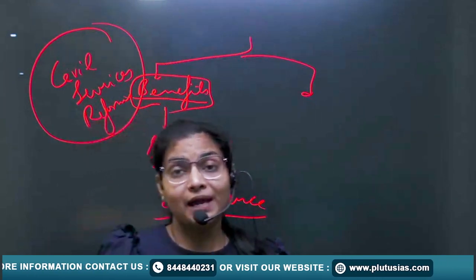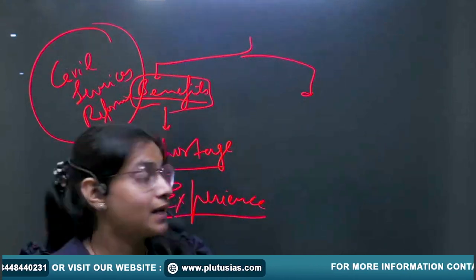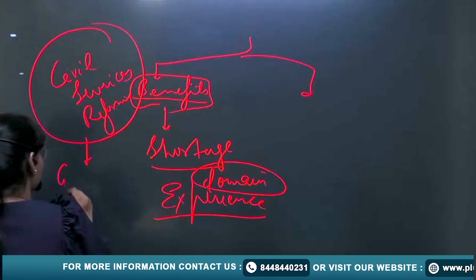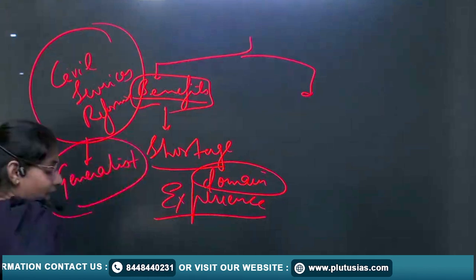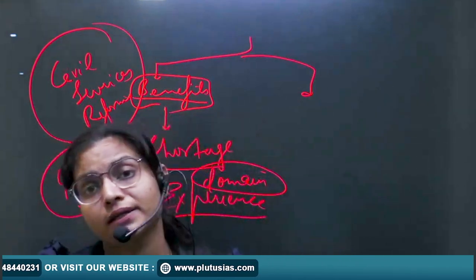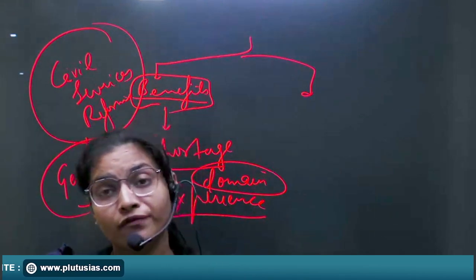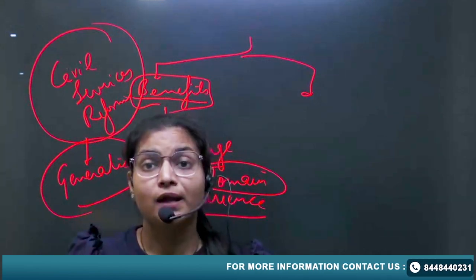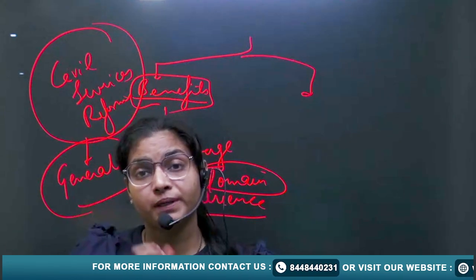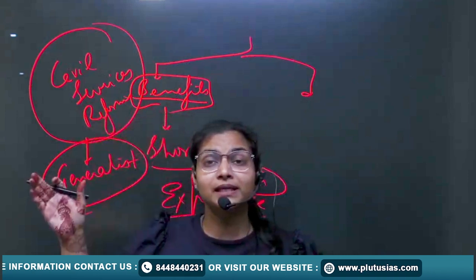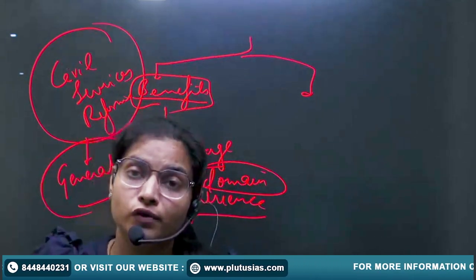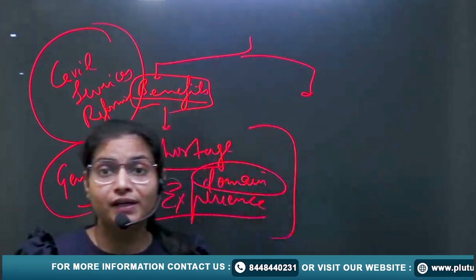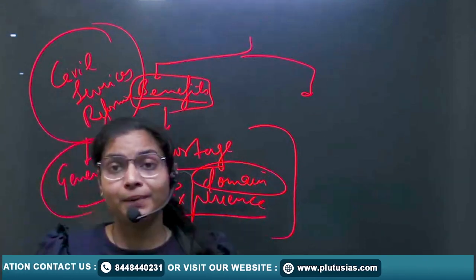Civil servants are generally generalists in nature, as they study general studies. For example, IRS — Indian Revenue Services — posts are not necessarily filled by Chartered Accountants; they can be filled by engineers as well. To bring more efficiency and domain expertise, we can bring experienced CAs into the Indian Revenue Services, bringing more efficiency into governance.